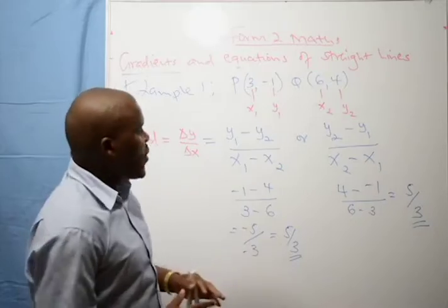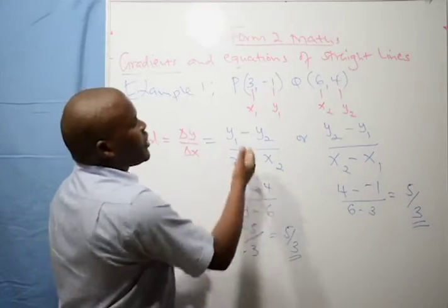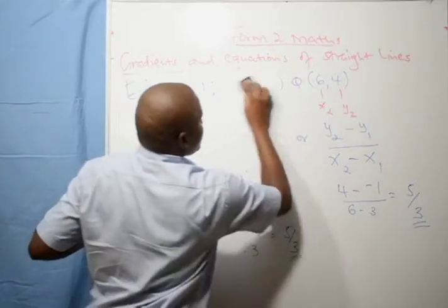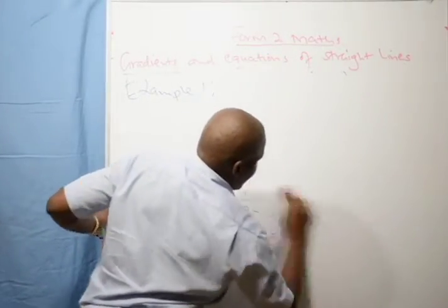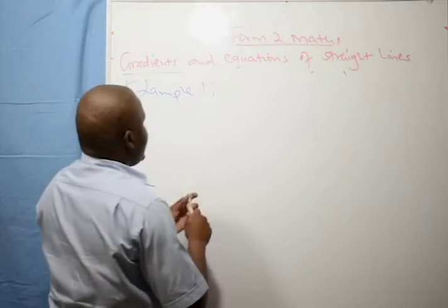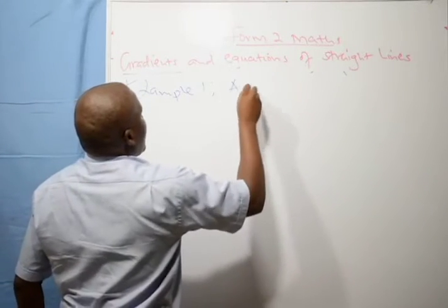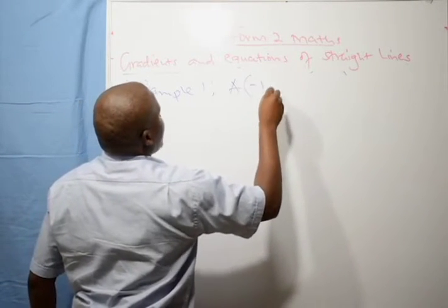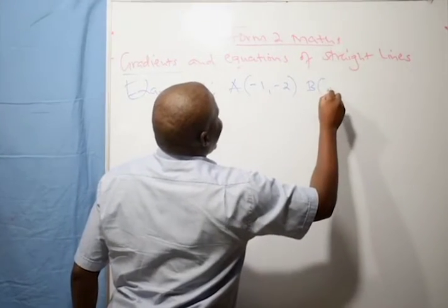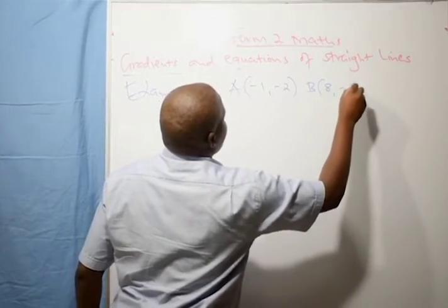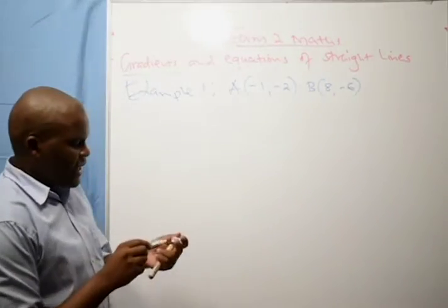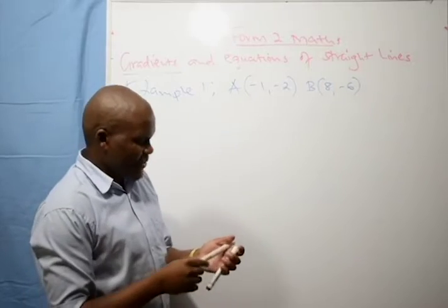Now let us look at Example 2. Without giving much detail, we are not going to use both methods. Let us have a line AB, where A is passing through (-1, -2) and B is at (8, -6). We want to find the gradient of that line.